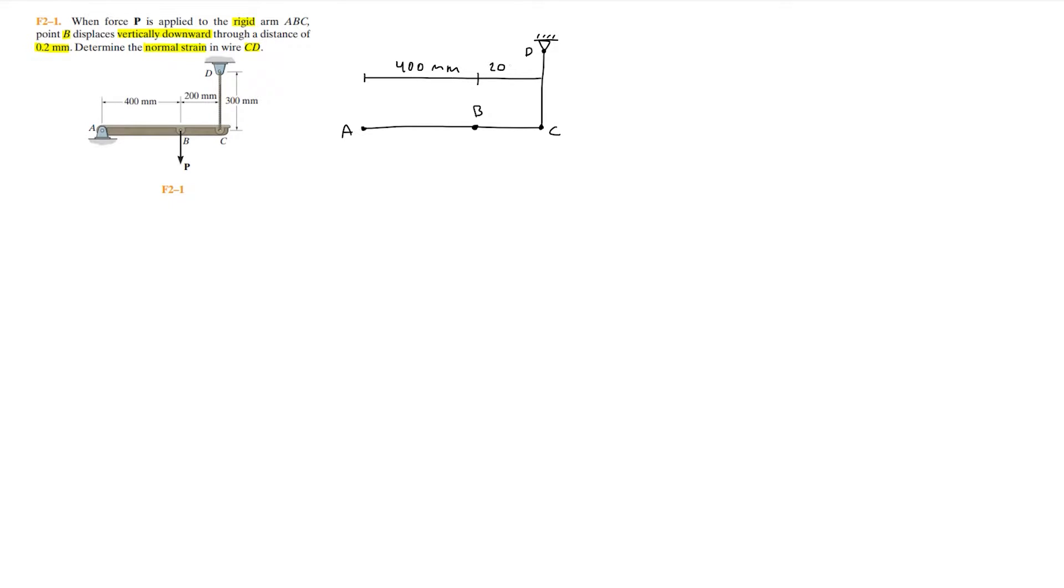The distance between B and C is 200 millimeters and between C and D 300 millimeters. Then at point B we have the force P that's vertically downwards which is going to pull this lever downwards. This blue line represents the second position of the arm and I'll call this point at position 2 B2, and then this point on the right C2. We know that the distance between B and B2 is 0.2 millimeters.